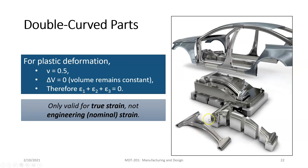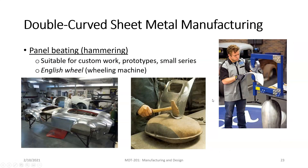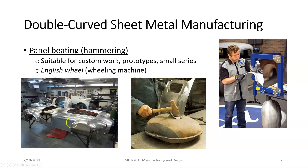These are some examples of double curved parts — a lot of them are structural because double curved parts are structurally strong for their weight; their strength-to-weight ratio is very good. One old method for creating double curved parts is using panel beating techniques like the English wheel. If you've watched shows about custom motorcycles, a lot of custom motorcycle metalwork is done using the English wheel or even beating the piece of metal on a bag filled with sand.